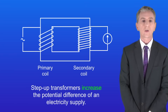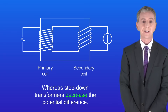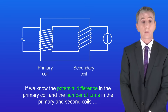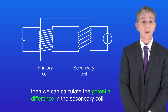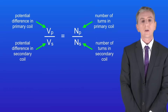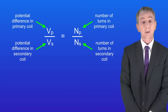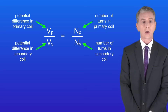In the last video we saw that step-up transformers increase the potential difference of an electricity supply, whereas step-down transformers decrease the potential difference. Now if we know the potential difference in the primary coil and the number of turns in the primary and secondary coils, then we can calculate the potential difference in the secondary coil using this equation: the potential difference in the primary coil divided by the potential difference in the secondary coil equals the number of turns in the primary coil divided by the number of turns in the secondary coil.